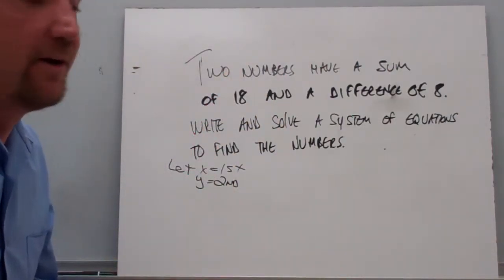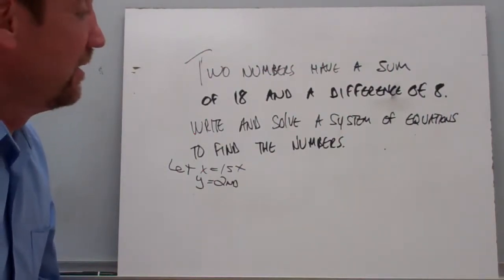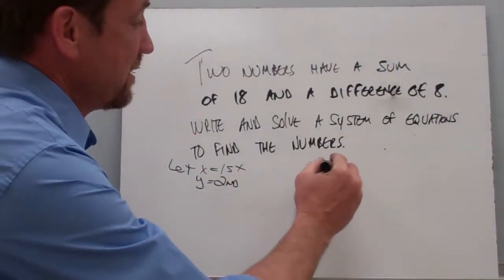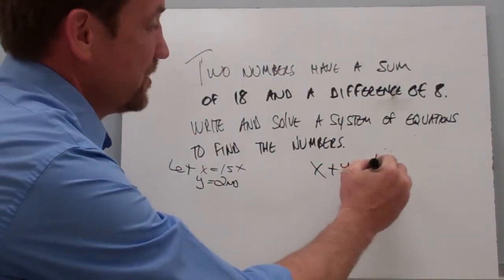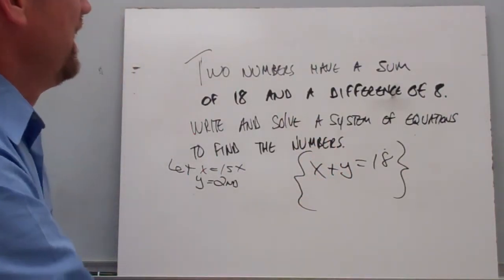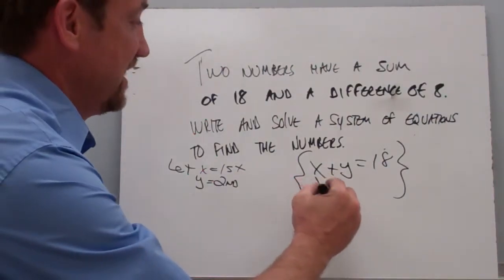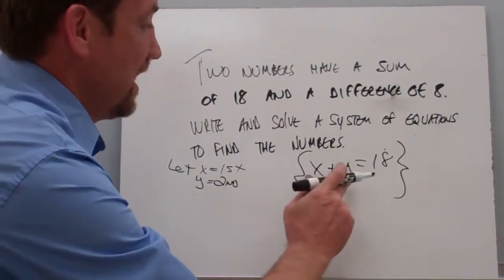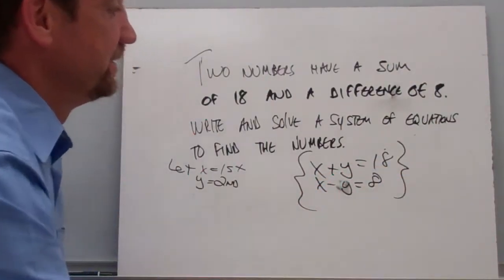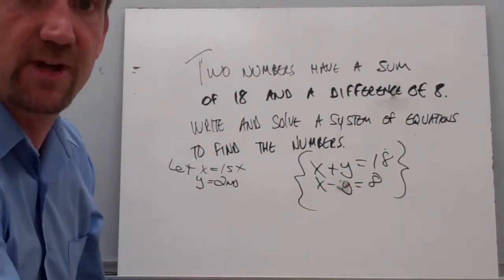Now let's go up to our problem here. It tells us that the numbers have a sum of 18. The way we get a sum is by adding numbers, so I know that x plus y equals 18. That's the first equation in my system. And they have a difference of 8, so I can say that x minus y equals 8. There's the system of equations we're going to use to figure out what these two numbers are.